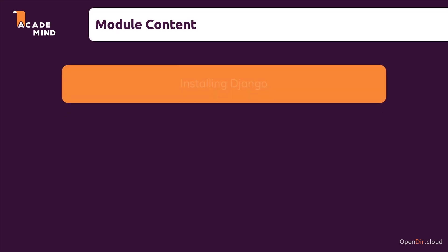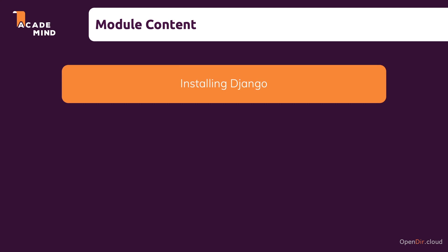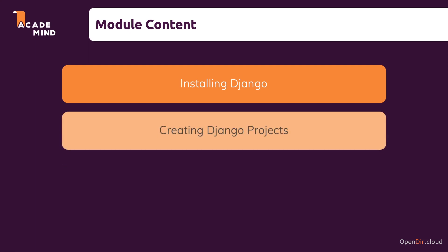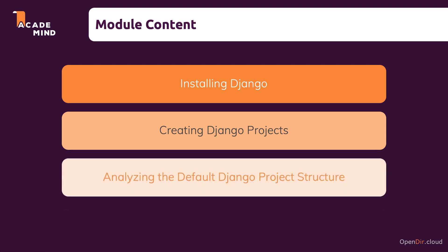We're going to start by installing Django itself on our system, then we're going to see how we can create brand new Django projects once Django is installed. Last but not least, we will also analyze a brand new Django project, because we will get some default files and a default folder structure there, and we're going to dive into that and learn what Django created for us. So let's get started and dive right in.